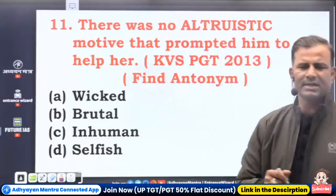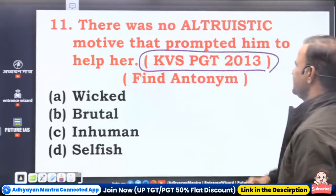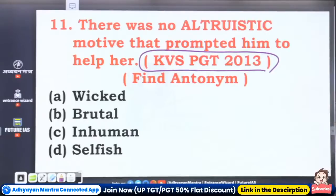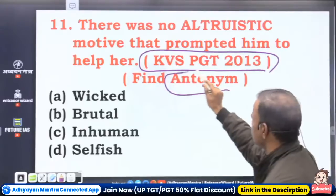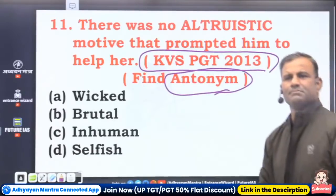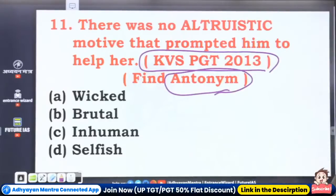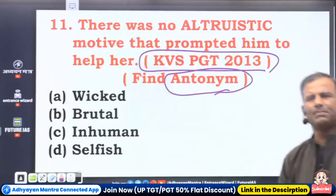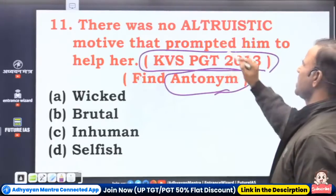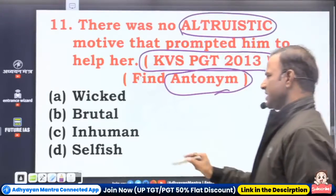Altruistic — this appeared in KVS PGT 2030. 'There was no altruistic motive that prompted him to help her.' Note: the question says 'find antonym.' Alter means other, so altruistic motive means when you are helping other people. Altruistic synonyms: benevolent, good Samaritan, philanthropist. If the altruist helps others, the selfish person does not help anyone. So the antonym of altruistic is selfish.